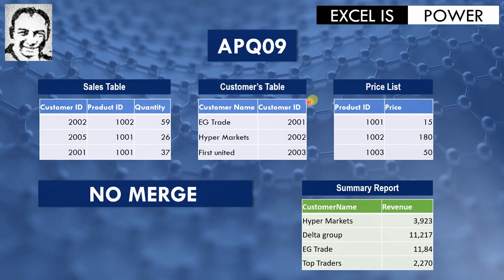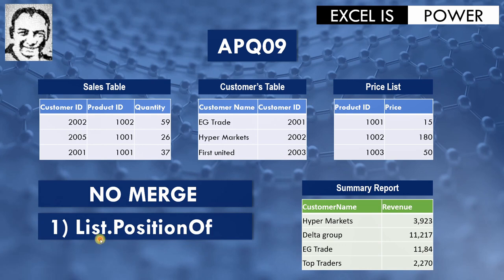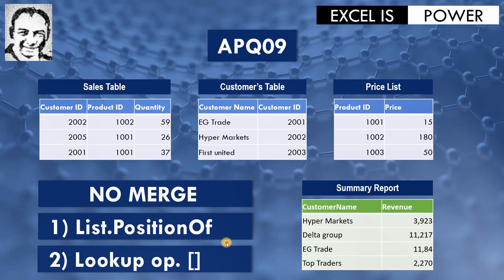We have only one condition: you are not allowed to use merge queries. We are going to use two different methods instead. The first one is the function List.PositionOf; the second one will be the lookup operator, or the double square brackets. These two methods are going to help us bring data across different tables without using any merge queries.